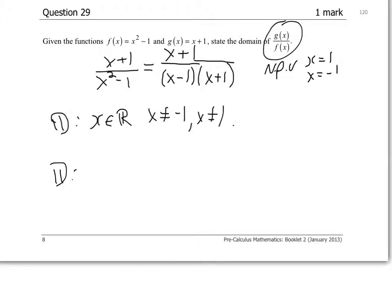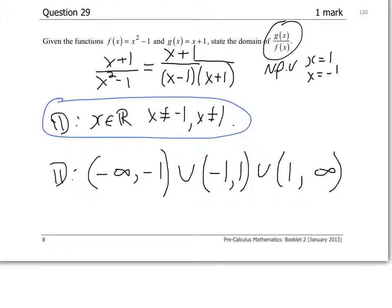So we could also state this as our domain being from negative infinity to negative 1. Open brackets because neither is included. Union, negative 1 to 1. Keep the brackets open. And union, 1 to infinity. I could see why with rational functions, most people prefer domain stated this way.